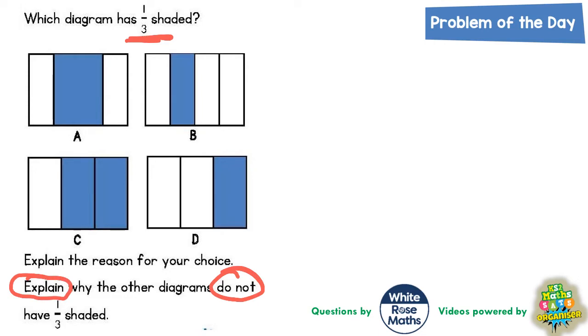Well hopefully you can see that D is actually the correct answer for this because all three rectangles are the same size and any one of them is shaded. So D has one rectangle shaded out of a possible three, so that's why D has the one third shaded.